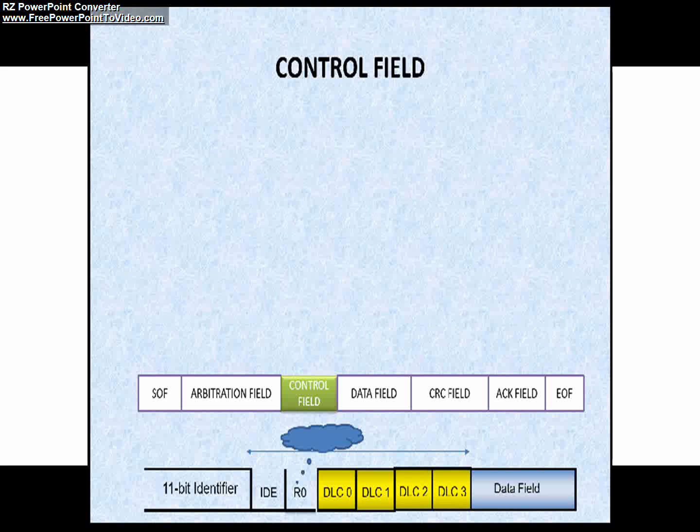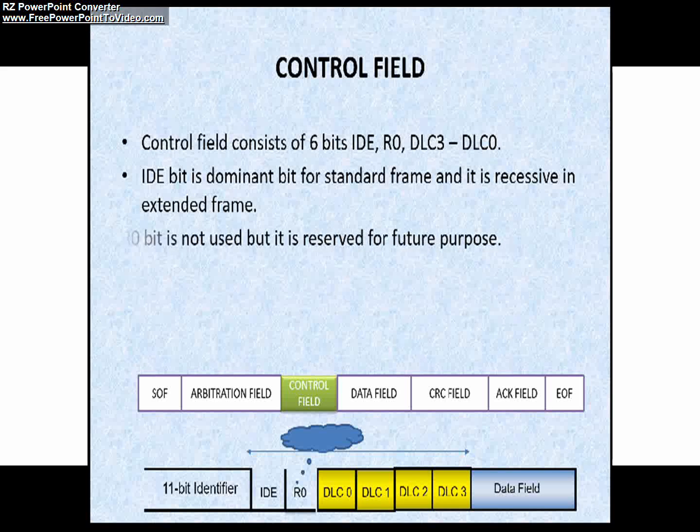This DLC bits or data length code of 4 bits is used to indicate how many data bytes are transmitted, and it may take values from 0 to 8. Other values are not allowed. This is just a short note about the control field.